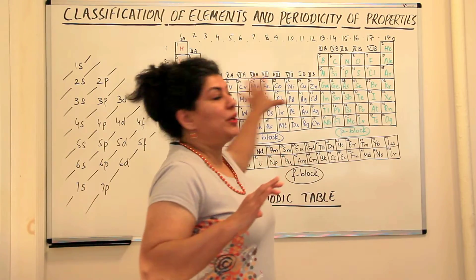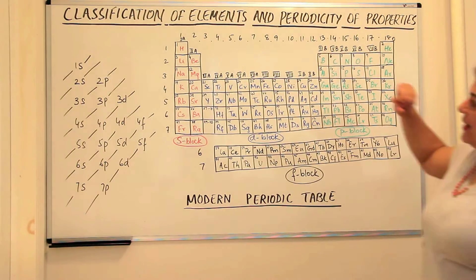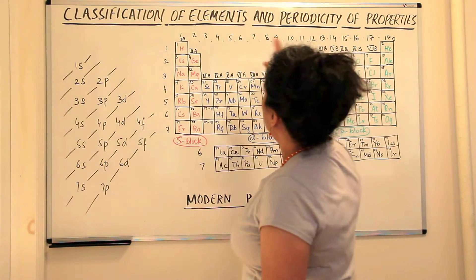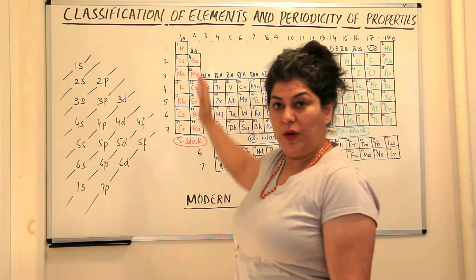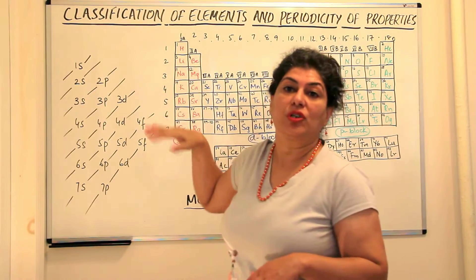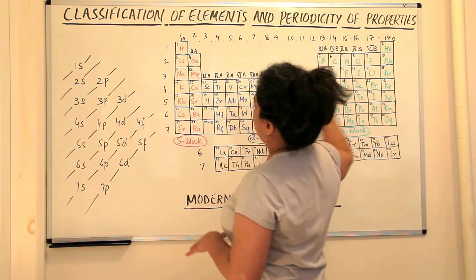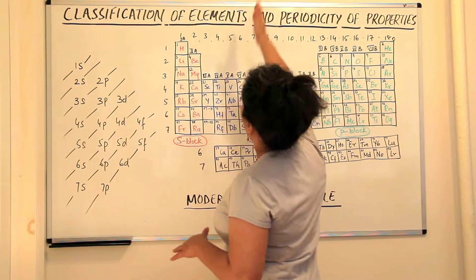Now this is what the modern periodic table looks like. It had 18 groups which were called vertical columns and 7 periods that is horizontal rows. So these horizontal rows were known as periods and the vertical columns they were called groups.